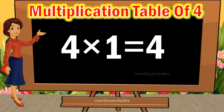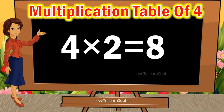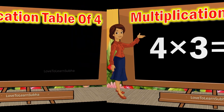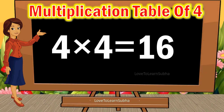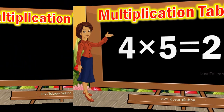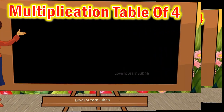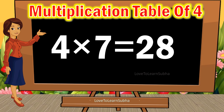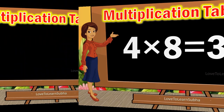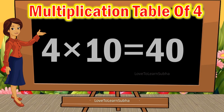4 ones are 4. 4 twos are 8. 4 threes are 12. 4 fours are 16. 4 fives are 20. 4 sixes are 24. 4 sevens are 28. 4 eights are 32. 4 nines are 36. 4 tens are 40.